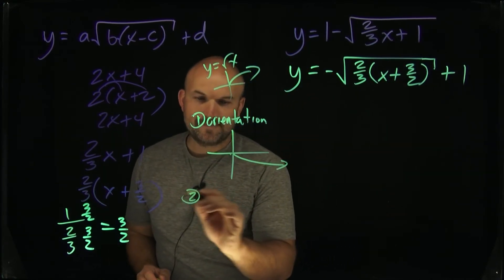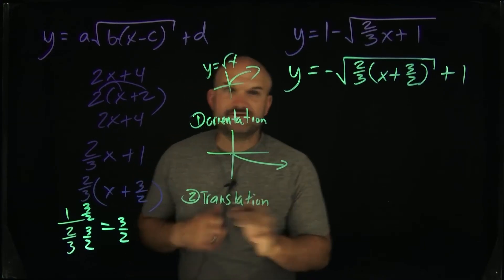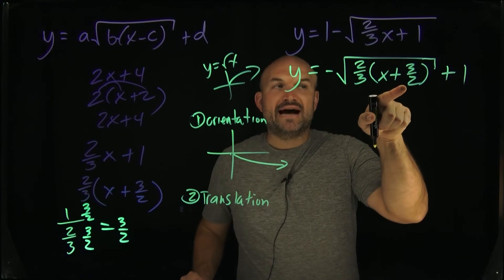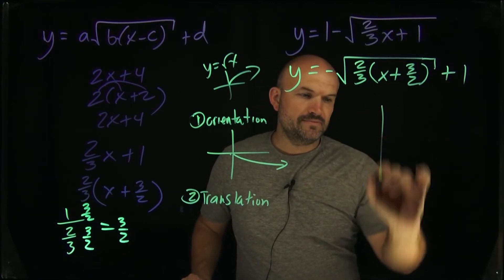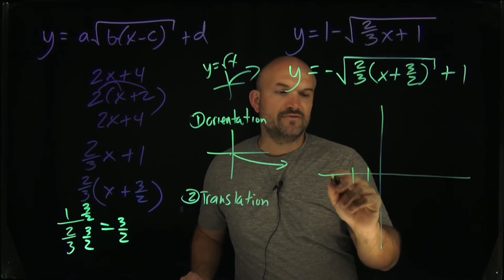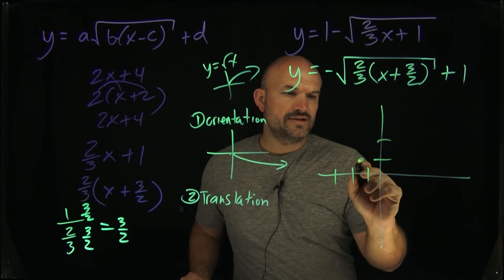All right. The next one, the next step is going to be the translations. That is going to be everything left and right. So you can see here, we're going to be shifting it left three halves and then up one. So all I'm simply going to do here. So if I'm going by ones, right, we're going left three halves. So that's one and one half, right? So one and one half, and then we're going to go up one.